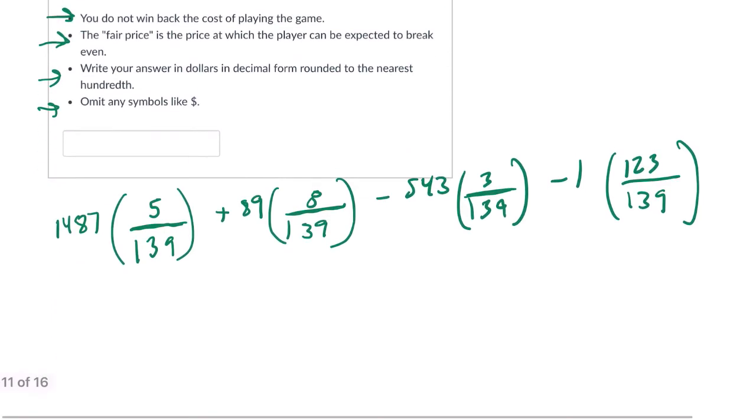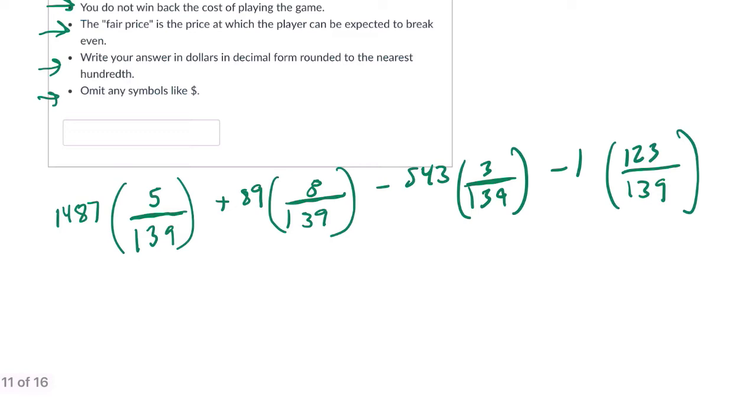Another way to do it that I saw, I've seen many students do this, is to solve it all directly in an equation and say, well, you want to take away the cost of the game, because you don't win it back, from each of these prizes, right? So if it's like a $10 game, and you win this big prize, yeah, you do win $1,487, but you have to pay $10 to get there.